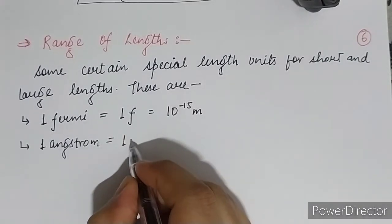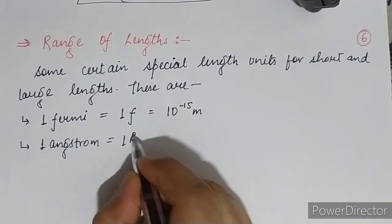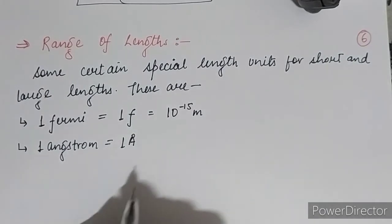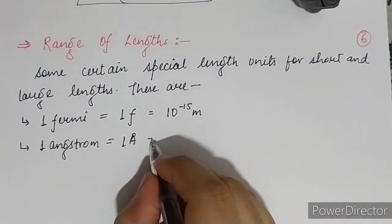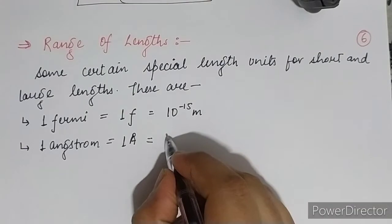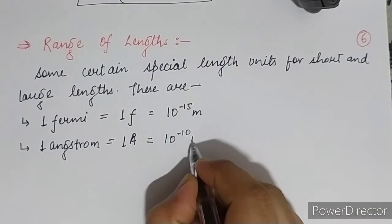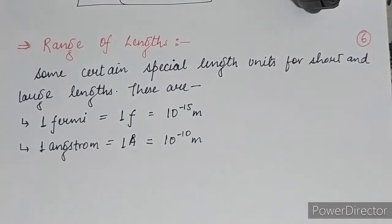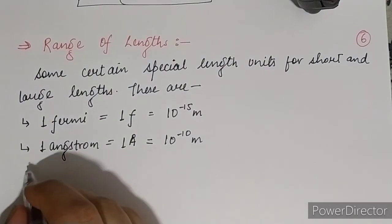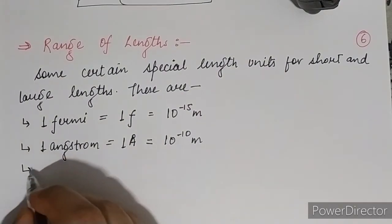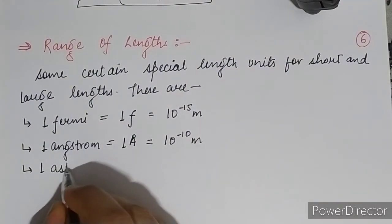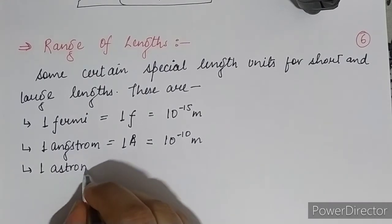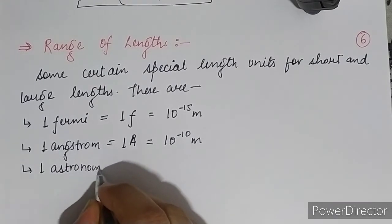Next is the angstrom, which is also a unit in the range of length. It is denoted by Å and its value is 10 to the power minus 10 meters.